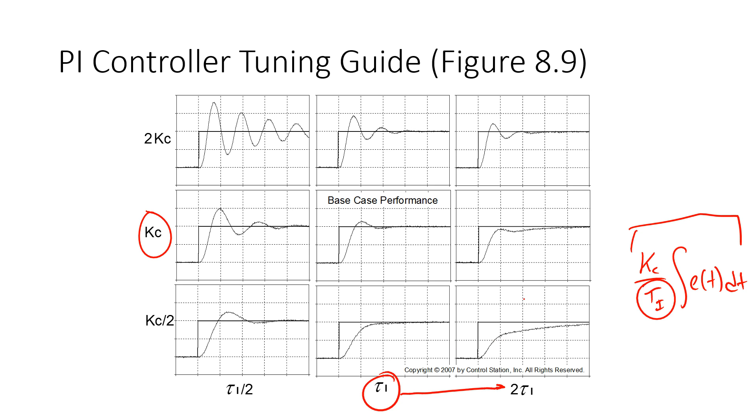It becomes less aggressive to correct for that persistent offset. This is less aggressive as I increase tau I. And it becomes more aggressive as I decrease tau I. But it's the opposite with Kc. I have my Kc times e of t. That's the proportional term. And then here's my integral term right down below. As I increase Kc, it's going to respond more quickly to error.